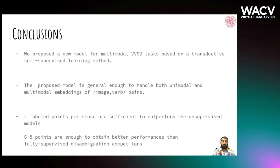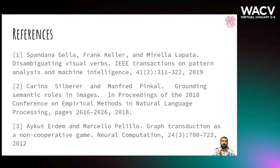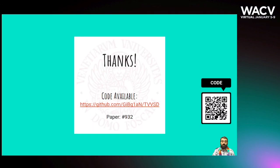In conclusion, we propose a new model for multimodal visual verb sense disambiguation, based on a transductive semi-supervised learning method. The proposed model is general enough to handle both unimodal and multimodal embeddings of image-verb pairs. Two labelled points per sense are sufficient to outperform unsupervised models, while six to eight points are needed for better performance than fully supervised disambiguation competitors. Here are the key references for our work, and thanks for your attention — if you are interested, the code is available at the provided link.